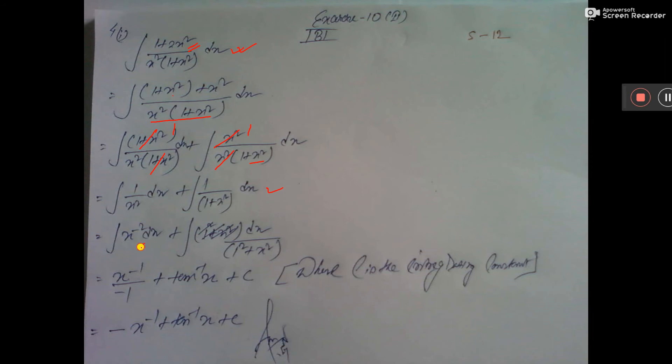This is x to the power minus 2 dx and in this place nothing required to do because one formula is there. dx by x squared plus 1, the formula is tan inverse x and here x to the power n plus 1 by n plus 1.